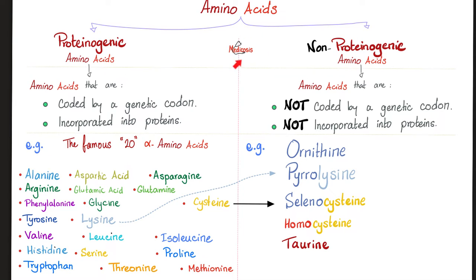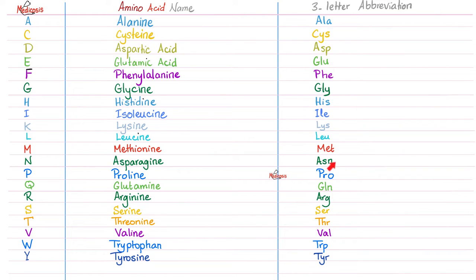Your professor may say there are only 20 amino acids, but more precisely there are 20 proteogenic amino acids in humans — these are not the only amino acids on the planet. There are also non-proteogenic amino acids, which are not coded for by a genetic codon and are not incorporated into protein synthesis. These include ornithine, pyrrolysine, selenocysteine, homocysteine, and taurine. Each of the 20 proteogenic amino acids has a name, a one-letter abbreviation, and a three-letter abbreviation.